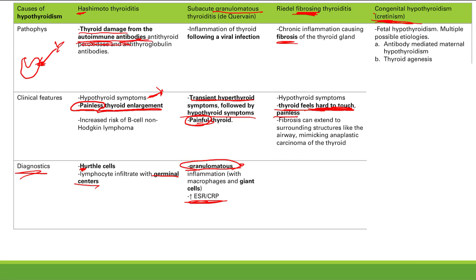Another cause is thyroid agenesis — a developmental defect where the thyroid simply doesn't develop. The remaining two involve defects in thyroid hormone production: iodine deficiency, since iodine is essential for thyroid hormone synthesis; and dyshormonogenetic goiter, a genetic defect in thyroid hormone production. The first two involve thyroid tissue damage; the last two involve problems with hormone production.